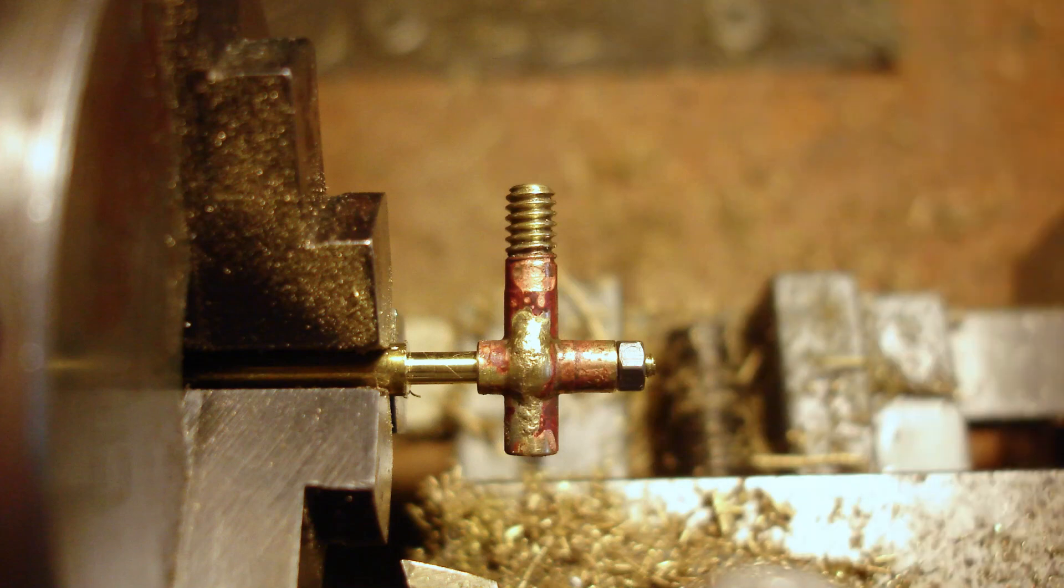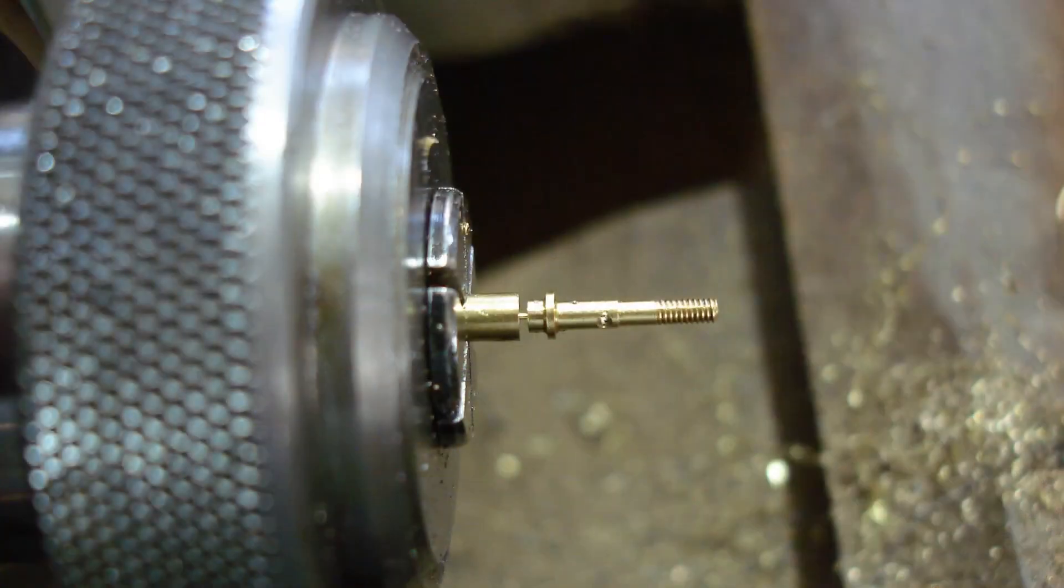The finished drain cock body being tested on an embryo valve spindle in the Unimat 3. An almost parted off valve spindle with cross hole drilled. The spindle working surface is 2mm diameter and the thread is 10BA.